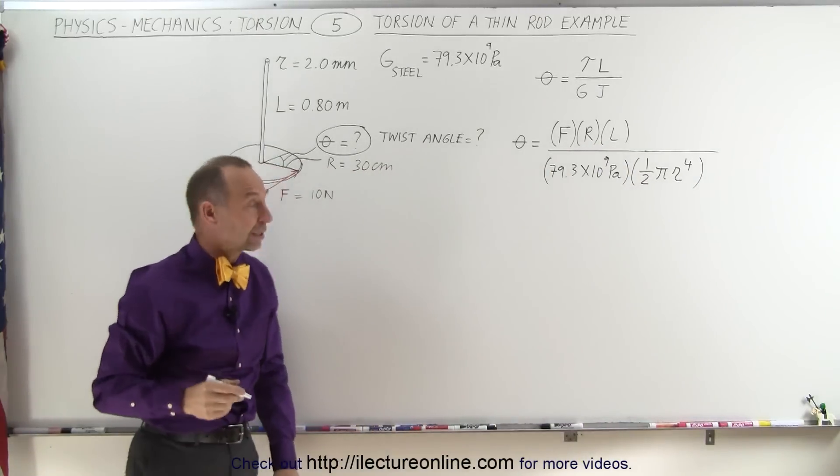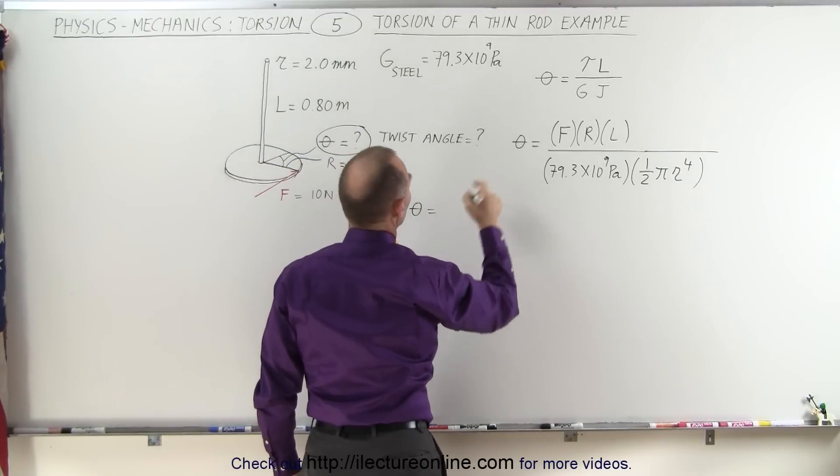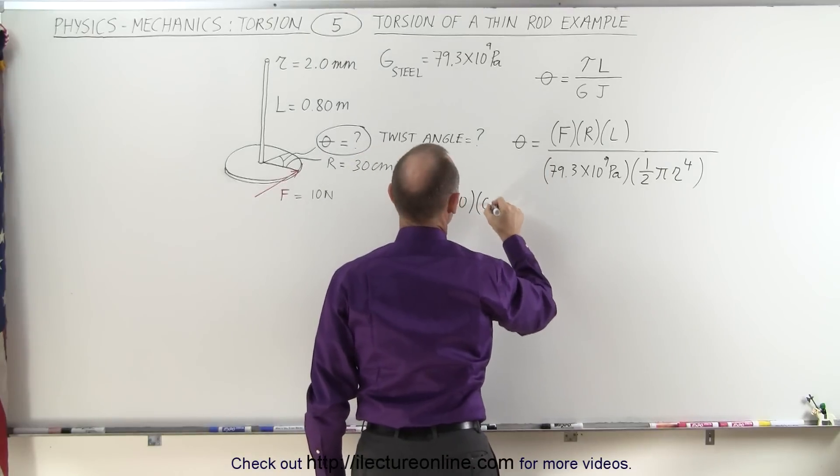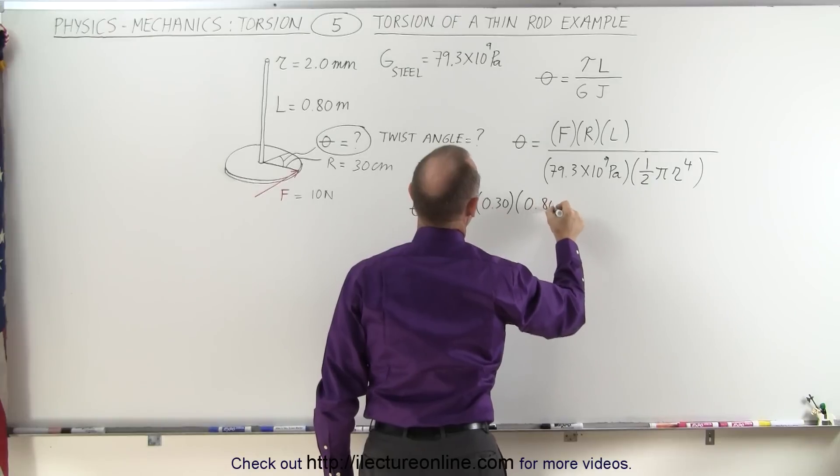Now we have everything we need to calculate that angle. Theta is equal to 10 newtons times the radius 30 centimeters, which is 0.30 meters, times the length 0.80 meters.